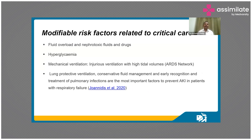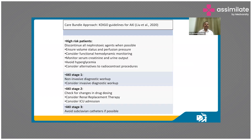The modifiable risk factors in critical care include: avoid fluid overload, avoid nephrotoxic fluids and drugs, and avoid hyperglycemia. Lung-protective, low tidal volume ventilation as per the ARDS network is useful for the kidney as well, because biotrauma damages both lungs and kidneys. Treatment is not just one single intervention — it requires a care bundle approach to protect your patient's kidneys.